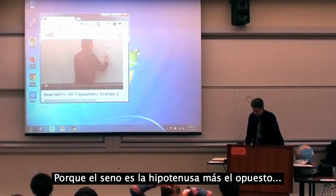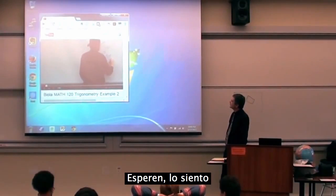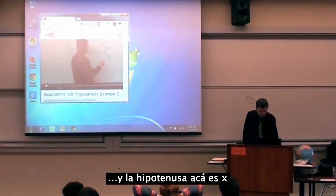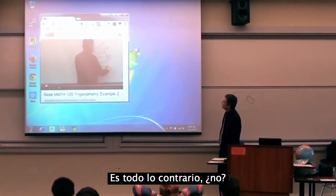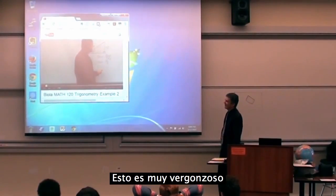Because the sine is hypotenuse over the opposite. Oh, wait. And so we've got sine... Oh, I'm sorry. And our hypotenuse here is X. That's totally backwards, isn't it? And sine is hypotenuse over opposite. That's really embarrassing.